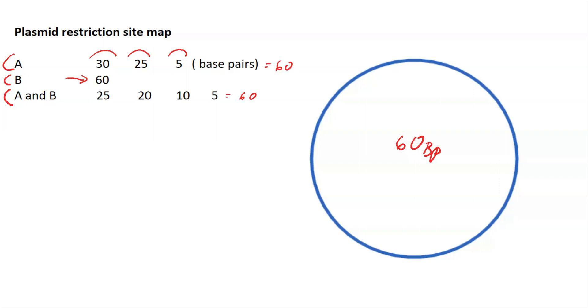We're going to map enzyme A restriction sites, and we'll start at 12 o'clock because this is a circular DNA molecule. This will be our first restriction site, and we'll label it as enzyme A. Notice we make a fragment that's made up of 30 base pairs. This is the first fragment, 30 base pairs.